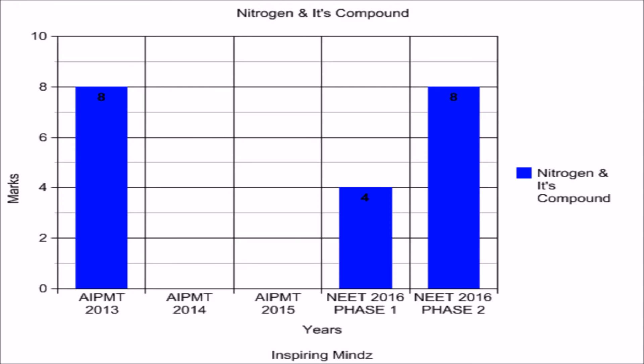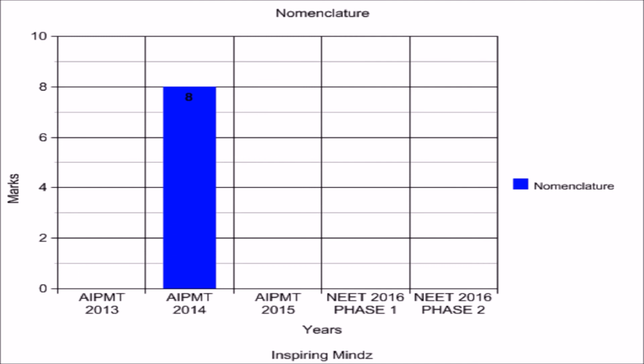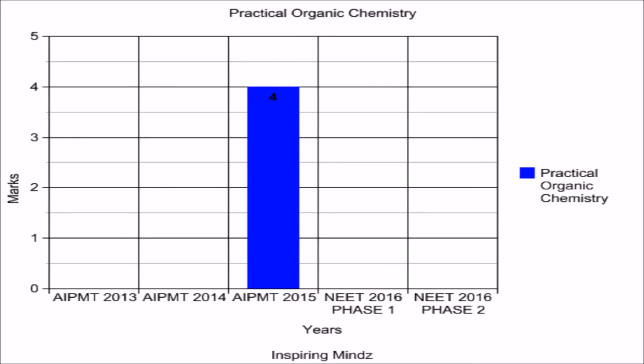Eight marks of questions were asked from Nomenclature in the AIPMT 2014 exam, while in all other years no questions were asked. For Practical Organic Chemistry: in AIPMT 2015 only 4 marks of questions were asked, while in AIPMT 2013, 2014, NEET 2016 phase 1 and phase 2, no questions were asked from this chapter.